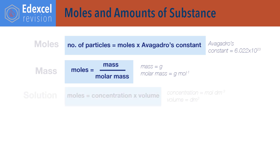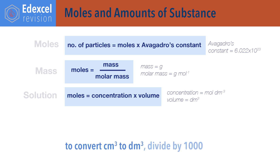Moles equals concentration times volume. Note that the units for concentration are usually moles per decimetre cubed, and volume should also be in decimetres cubed. To convert the more common volume unit of centimetres cubed to decimetres cubed, divide by 1000.